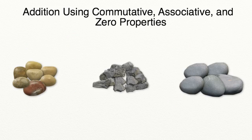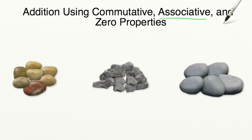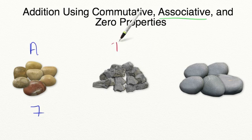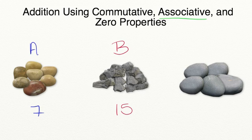Let's practice our addition using the associative property. The associative property is similar to the commutative property — it's about grouping numbers together. Let's look at these three rock collections. We'll label our first rock collection A, which has seven rocks. Our second rock collection B has 15 rocks. And lastly, rock collection C has five rocks.